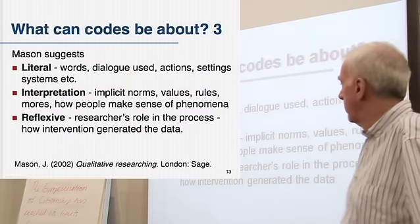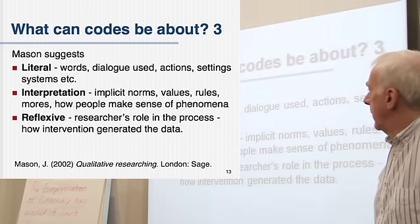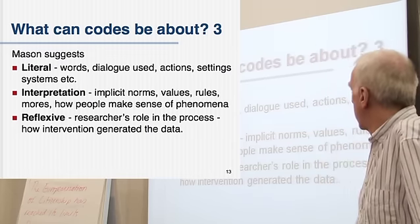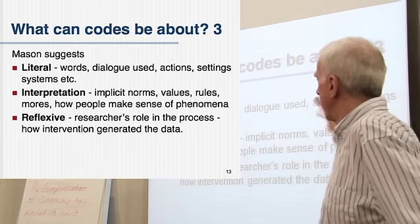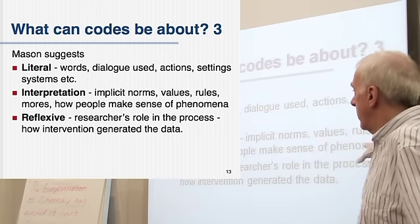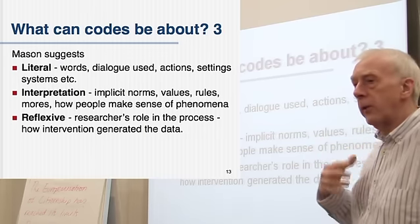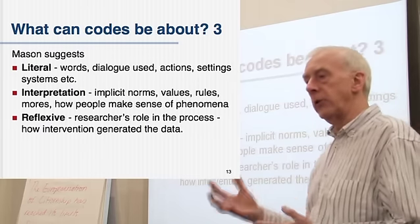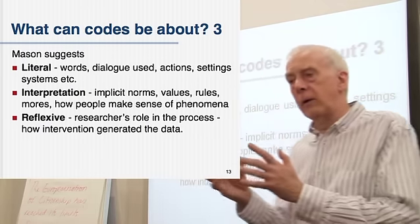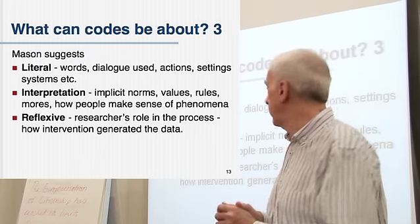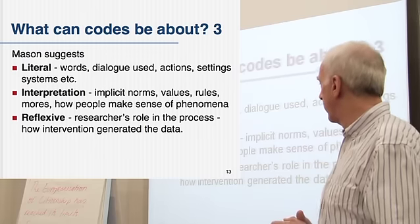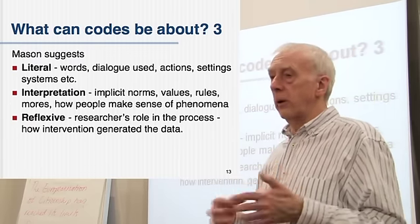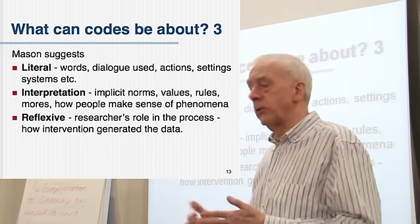Jennifer Mason, a British sociologist — she's actually a professor at Manchester — suggests these things: literal things, what words are used, what dialogue is carried out, what actions, setting systems. These are all things I've mentioned already, so nothing new there. And of course, the interpretation of them. In particular, she spells out what she means by that — the interpretation of implicit norms, the values and mores that are represented by what people are doing. Can you get behind what they're saying to some kind of understanding of what's actually happening? She also talks about a reflective approach — to look at the researcher's role in the activity and to what degree you as a researcher have actually affected what's going on, either by your questions or by your attitude.